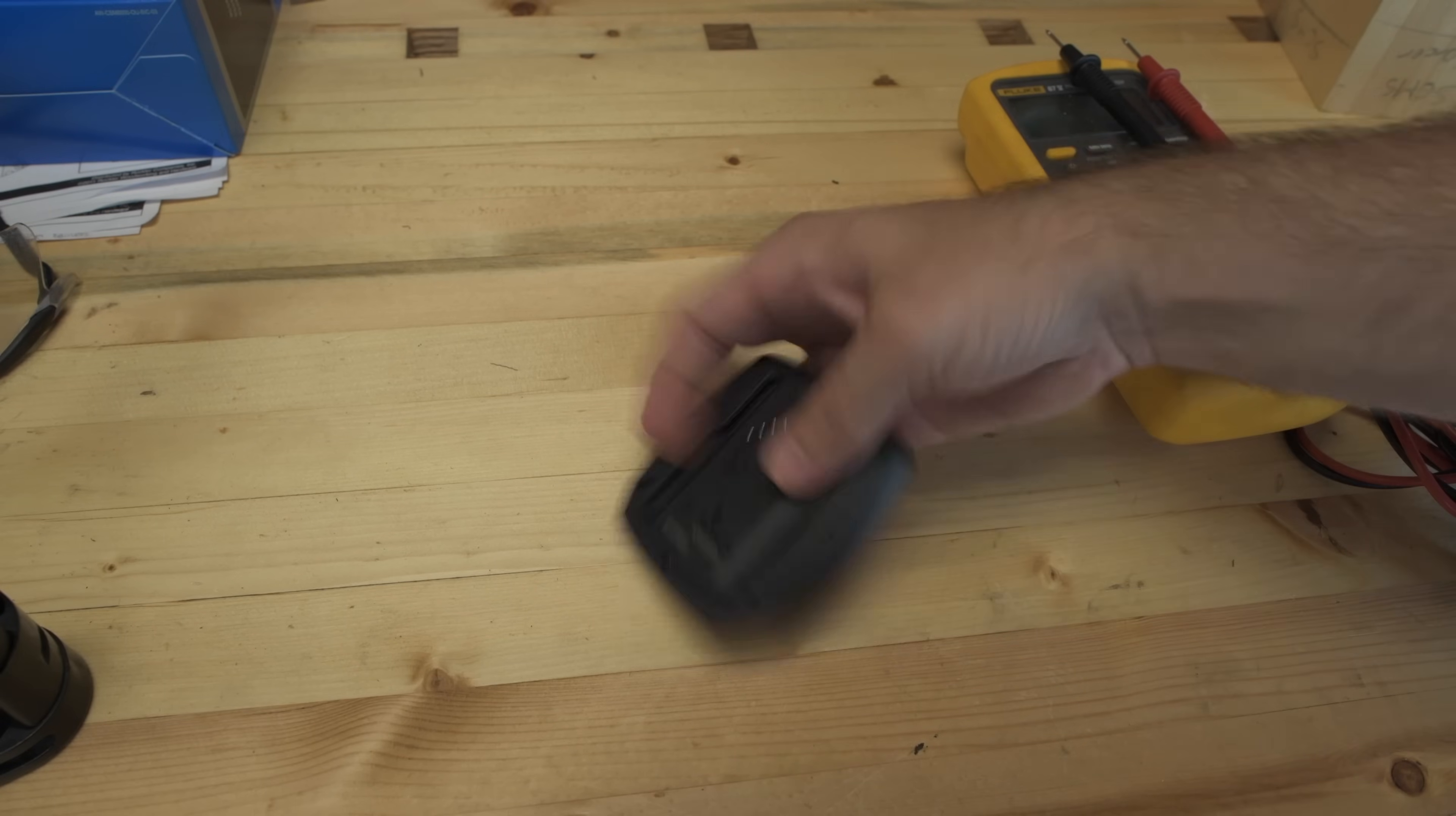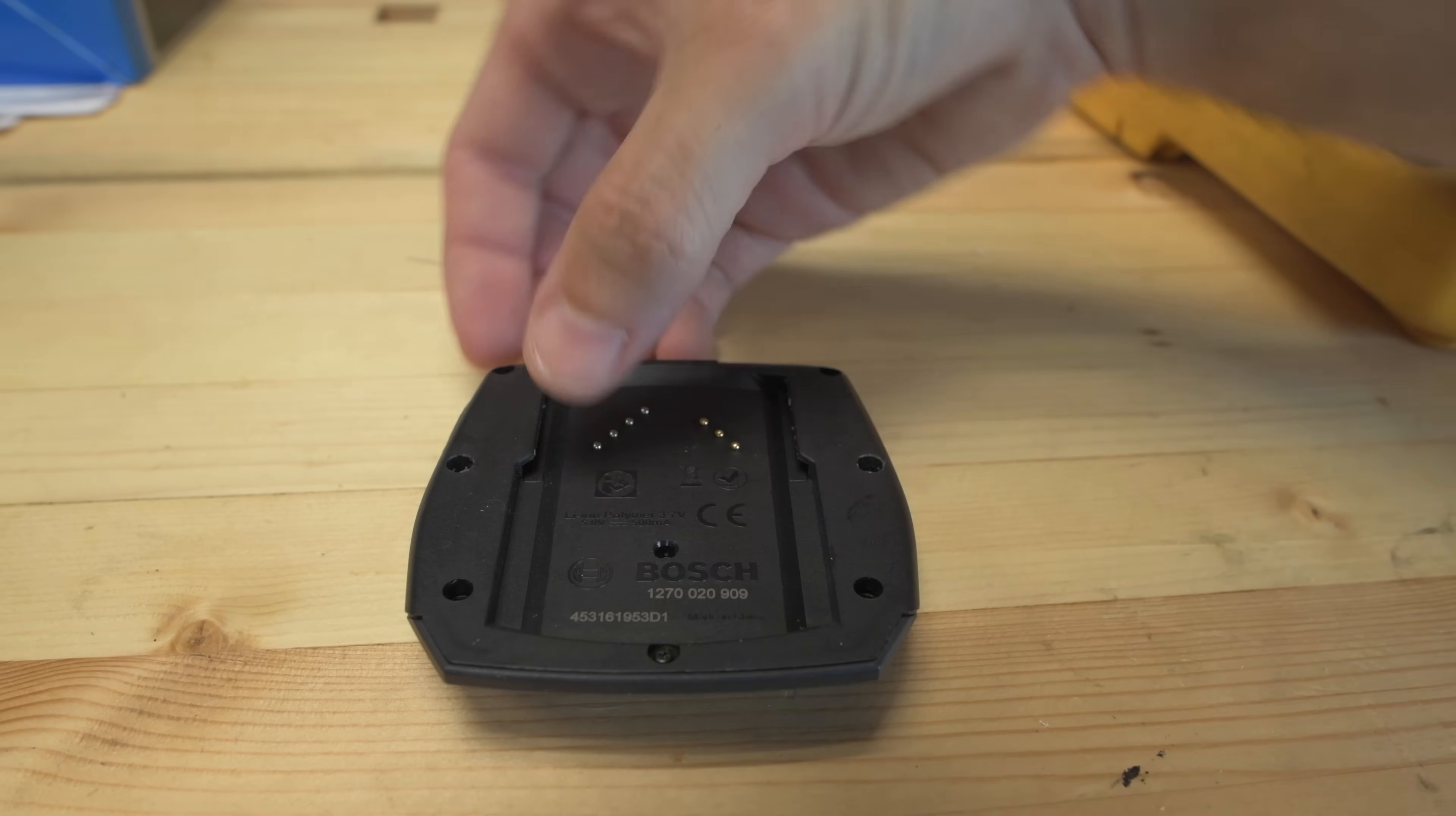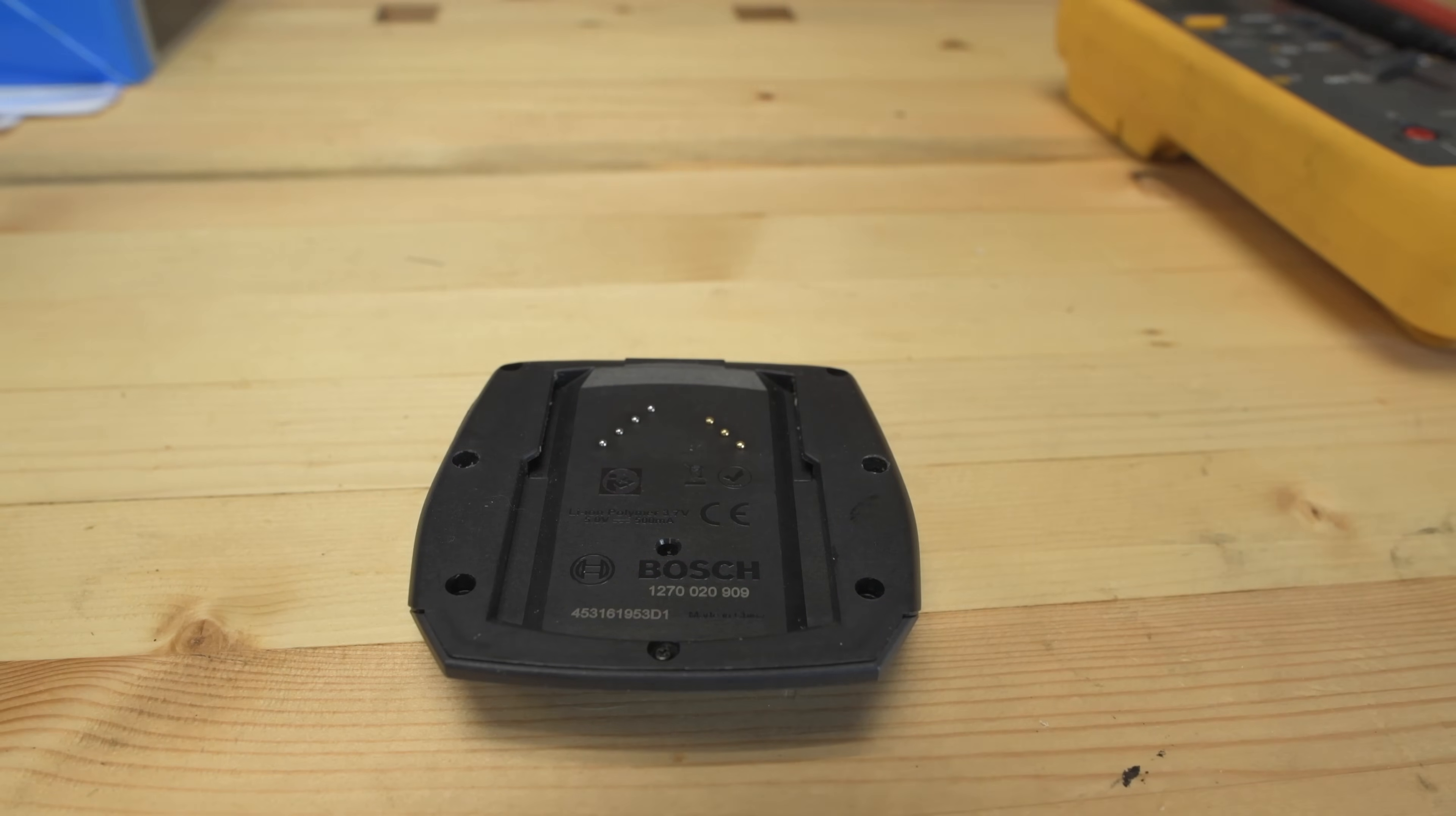So here's the head unit back at the workbench. You can see the contacts. They're pretty clean. The issue is that these head units actually have a lithium battery inside of them, and you can actually see it on the back here. It says lithium-ion polymer, 3.7 volts, 5.0 volts at 500 milliamps.